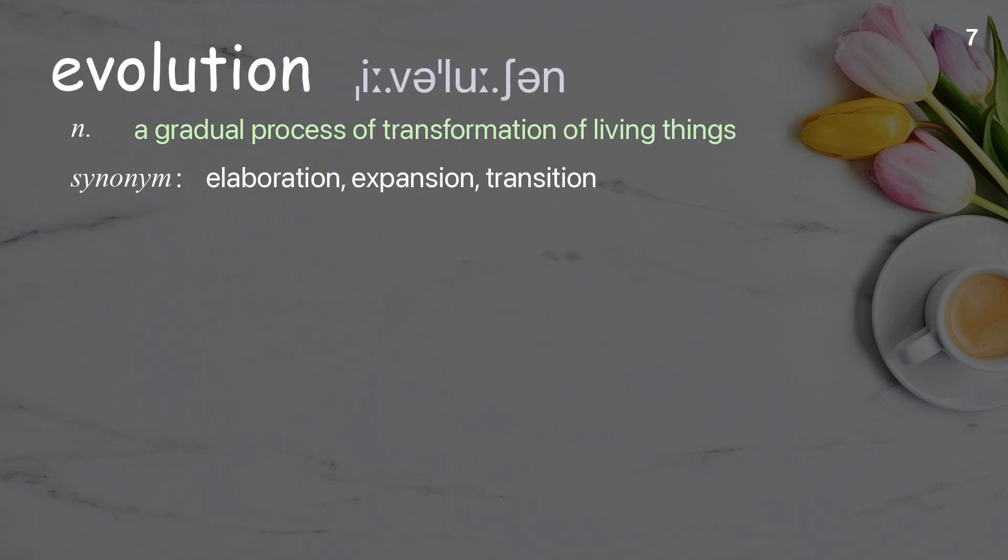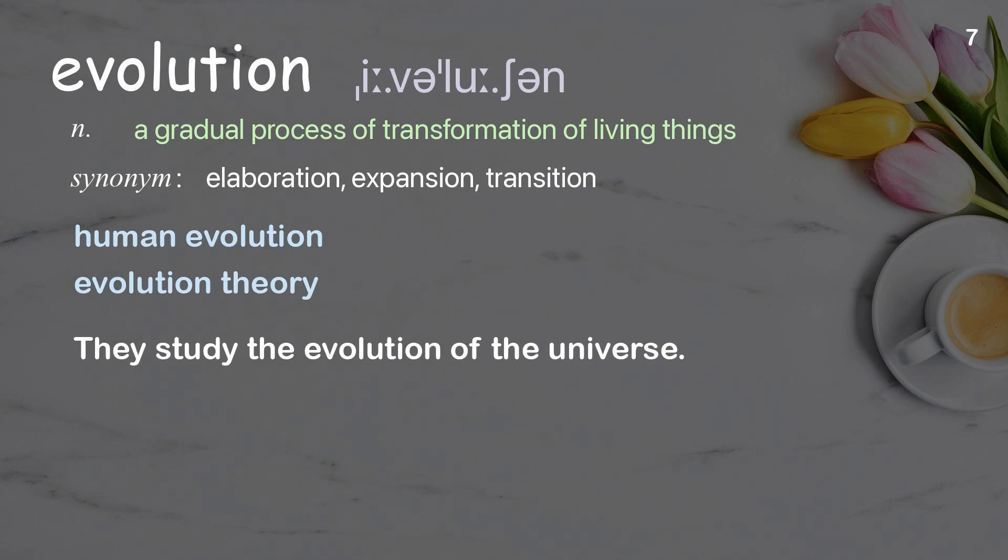Evolution: A gradual process of transformation of living things. Examples: Human evolution. Evolution theory. They study the evolution of the universe.